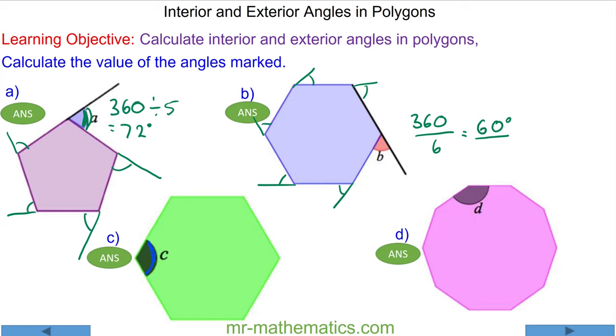For question C, to work out the interior angle, we need to consider the exterior angle because the interior and exterior angles add to make 180 degrees as they lie along a straight line. So C will be 180 degrees minus the exterior angle. The exterior angle for a hexagon, as we just saw, is 60 degrees. So the interior angle will be 180 minus 60, which is 120 degrees.